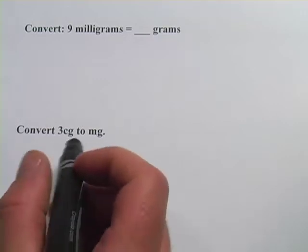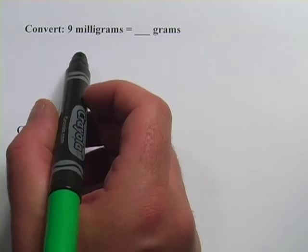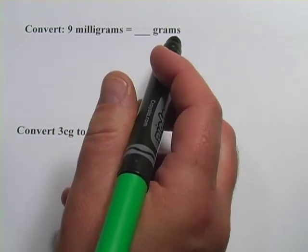In these problems, we're converting between different units of weight in the metric system. The first one says convert 9 milligrams to grams.